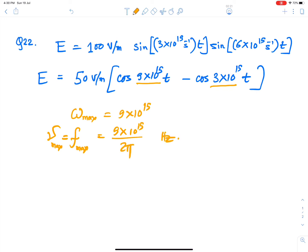The work function is given as 2 electron volts. What will be the maximum kinetic energy of the photoelectron?